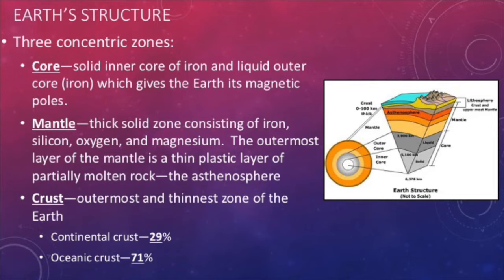Each of these layers are further broken down into different sections. The core is mostly made of iron and has a solid inner core and a liquid outer core. The core is a source of the earth's magnetic field.